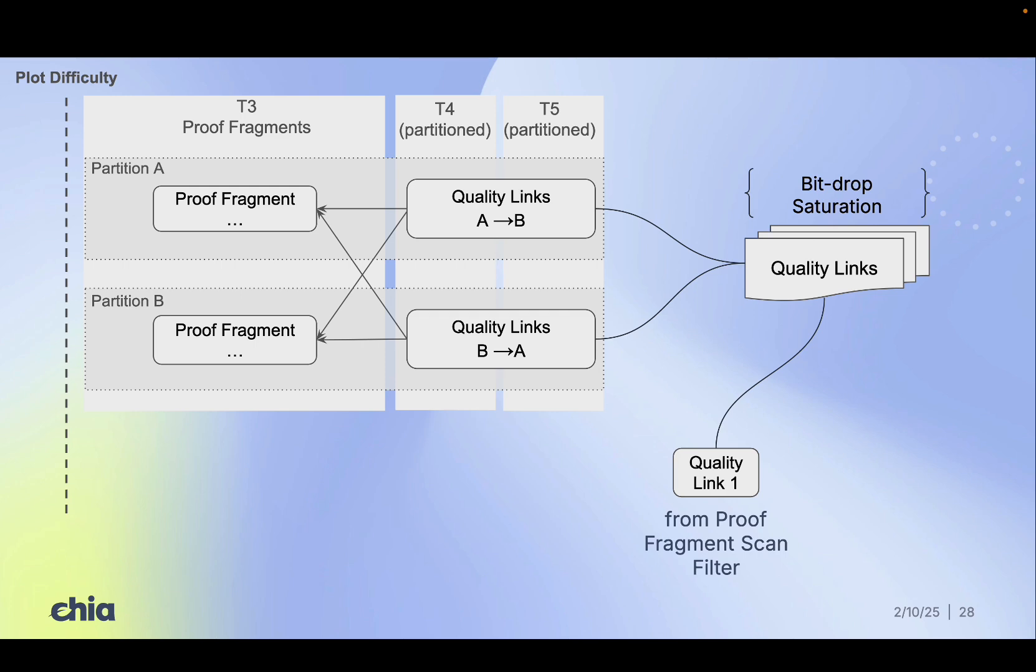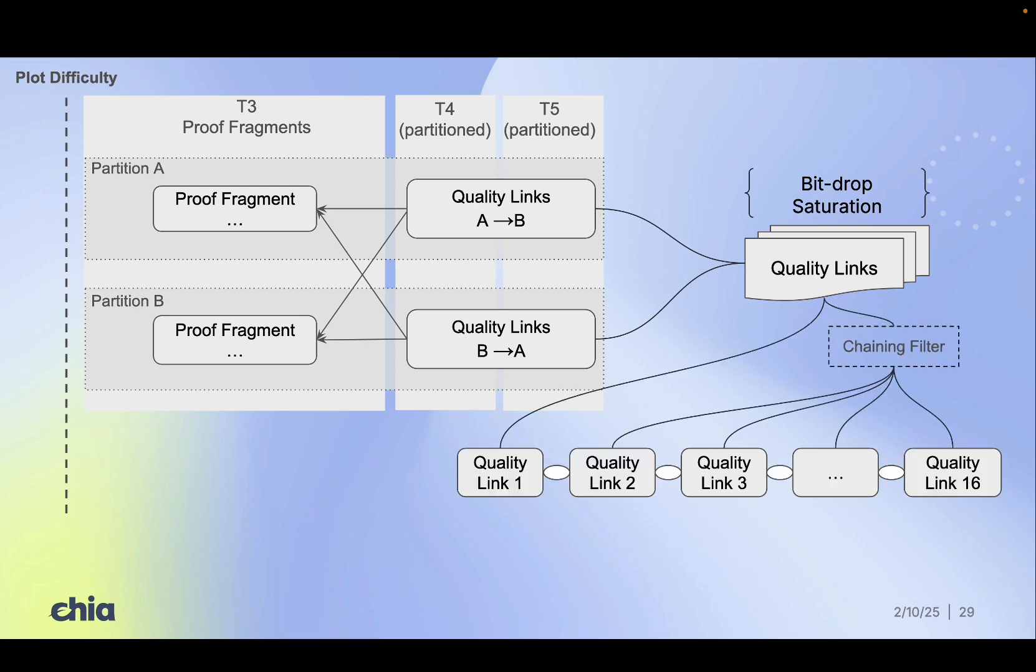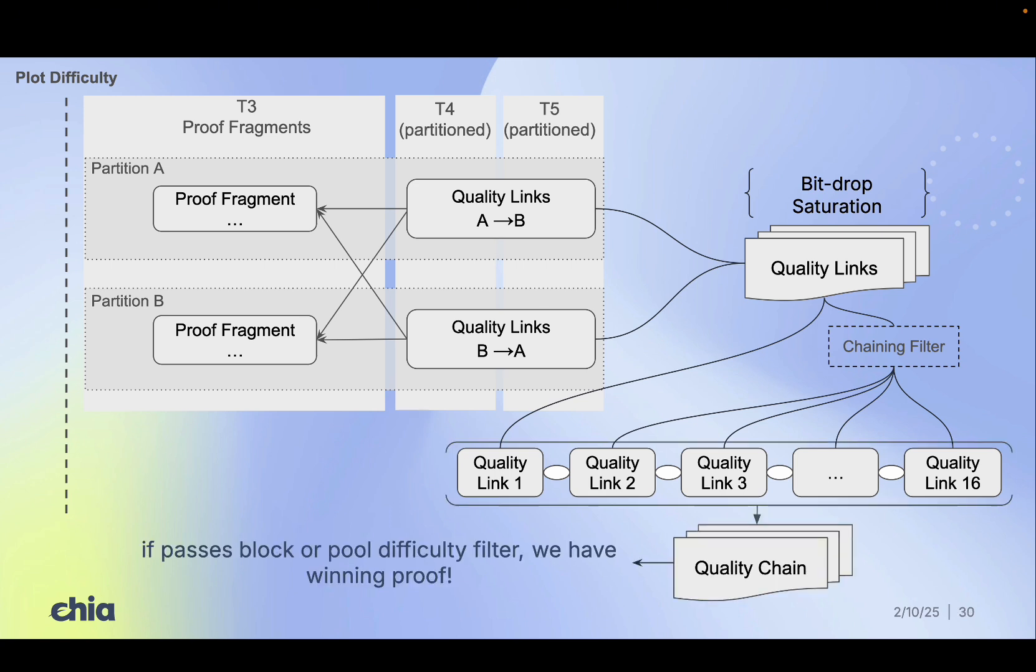From the quality link set, we begin building a quality chain, starting with the link formed from the first proof fragment that passed the scan filter. We then extend the chain by linking up to 16 quality links, each of which must pass an additional hash check with the challenge. Only after the full chain is formed do we check it against the block or pool partial difficulty.